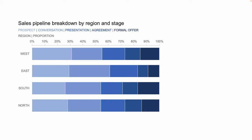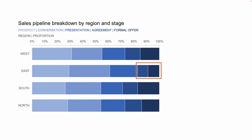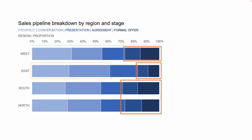Now we can take advantage of two distinct baselines: the first from 0% looking to the right, and the second from 100% looking back to the left. It's the view from that second baseline that makes the problem facing the east region clear. The final two stages combined — agreement and formal offer — represent barely 15% of the pipeline, compared with an average of nearly 30% across the other three regions. In addition, a notable amount of the east pipeline is in the prospect and conversation stages. This is alarming and shows that the short-term prospects in this region are bleak. Management needs to be informed.